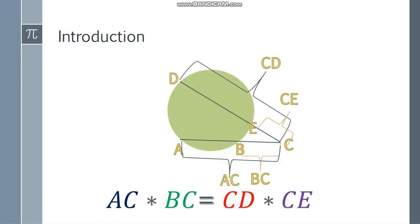The formula is: segment AC, the whole secant, multiplied by the external segment BC equals the whole secant on the other side, CD, multiplied by its external segment CE. So we have AC times BC equals CD times CE.